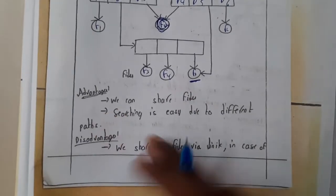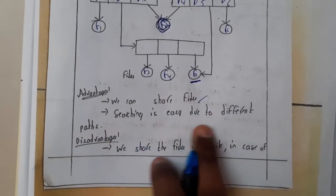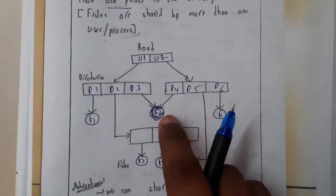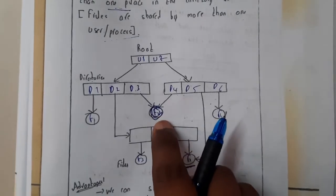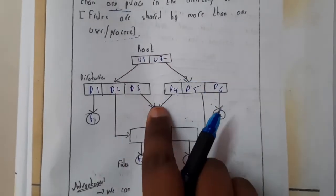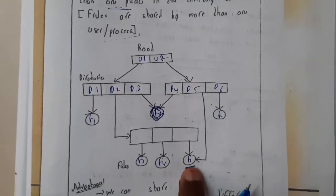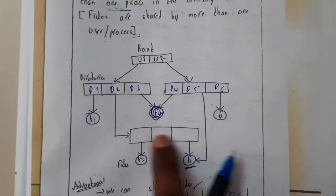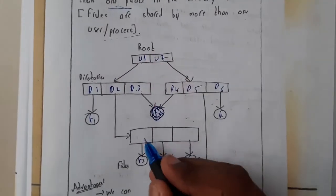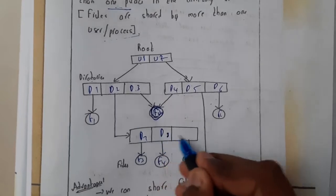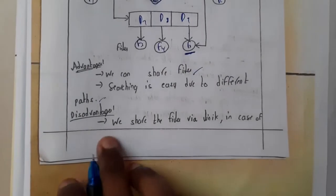Basically, the advantage will be we can share the files. Searching is due to different paths. If you want to search this F2 file, you can come in this path or in this path, so we are having multiple paths. Let us assume this F5. You can come in this way or you can come in this way. I hope everyone got a small idea on this.